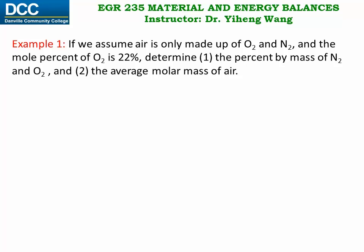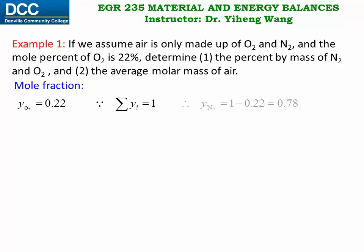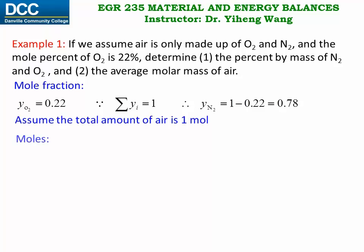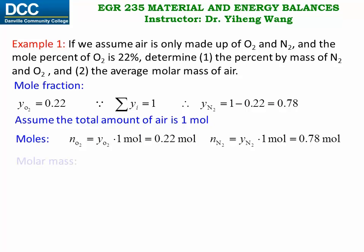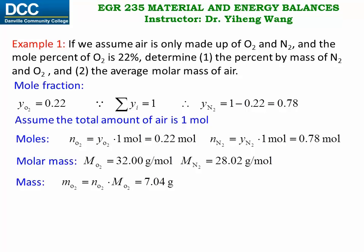In this problem, we are given that the mole percent of oxygen is 22 percent, meaning the mole fraction of oxygen is 0.22. Since the sum of mole fractions equals 1, and this mixture only has two components, the mole fraction of nitrogen equals 1 minus 0.22, which is 0.78. Assuming a total of 1 mole of air, we have 0.22 mole of oxygen and 0.78 mole of nitrogen. The molecular weights are 32 g/mol for oxygen and 28.02 g/mol for nitrogen, giving a mass of 7.04 grams for oxygen and 21.86 grams for nitrogen.